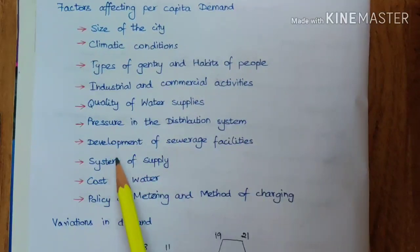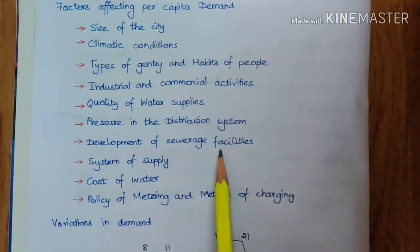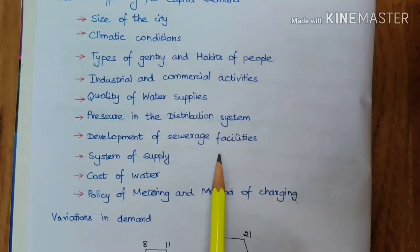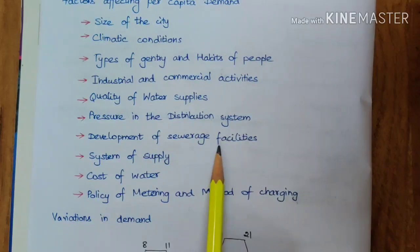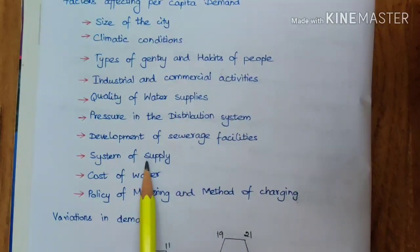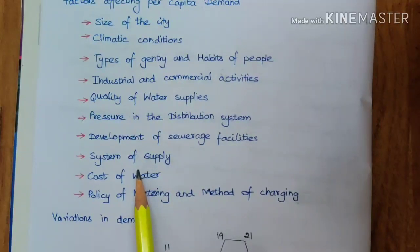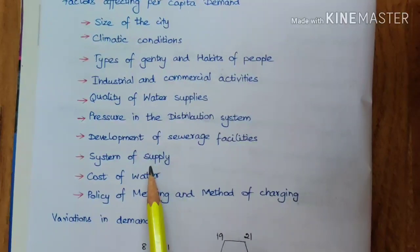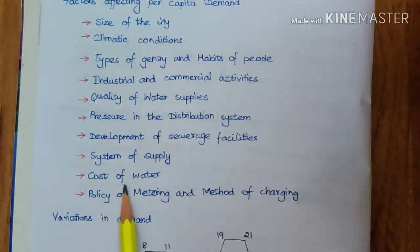The next factor is development of sewerage facilities. In some buildings a flushing system is provided, so water consumption will be more there; if using old conservation-type latrines, consumption will be lesser. The next is system of supply — water may be supplied 24 hours a day in some areas, while in others it is provided only at peak hours or for limited hours, which also affects per capita demand.